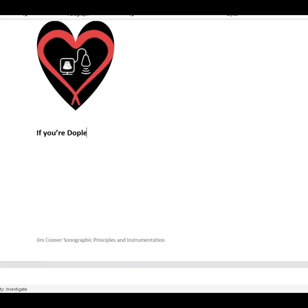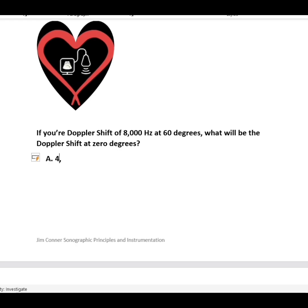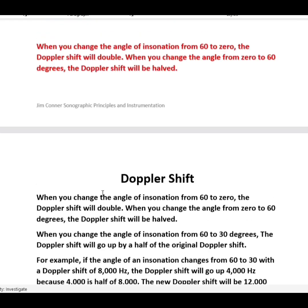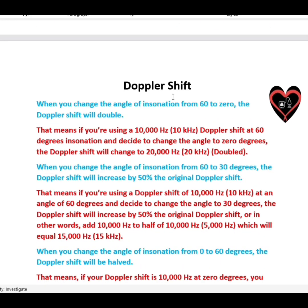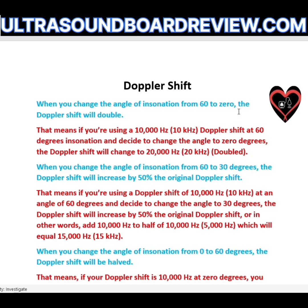If you're using a Doppler shift of 8,000 Hz at 60 degrees, what will be the Doppler shift if you change your angle from 60 degrees to zero degrees? The options are 4,000 Hz, 16,000 Hz, 8,000 Hz, or 6,000 Hz. The answer is B — 16,000 Hz. This is a big subject. If you see a question about changing the installation angle from 60 to zero degrees, you simply double your initial Doppler shift.